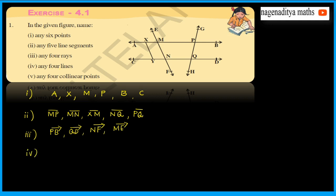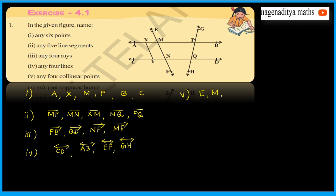The fourth question: name any four lines. The four lines are: CD, AB, EF, and GH.